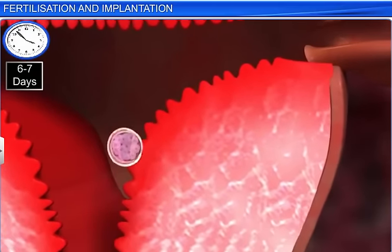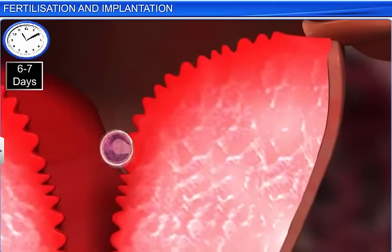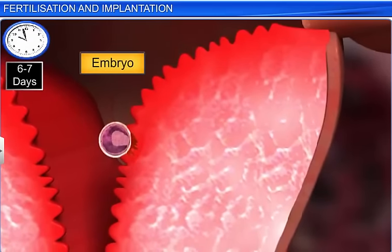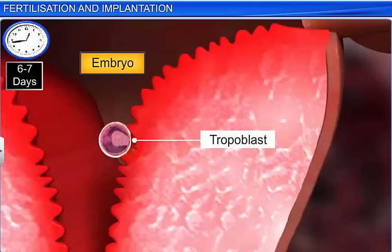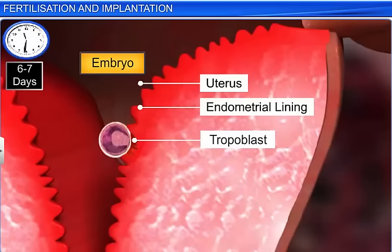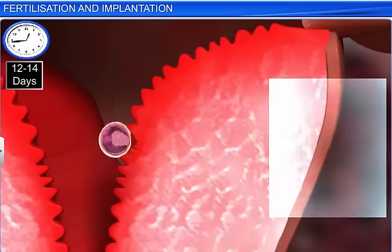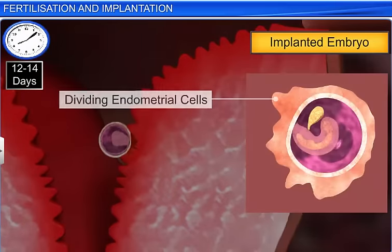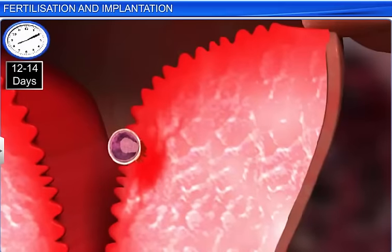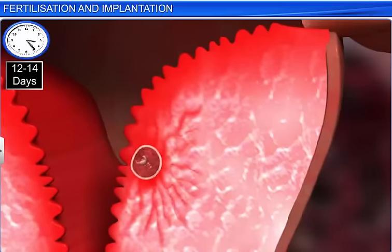Interestingly, at the blastocyst stage, the zygote — now called the embryo — gets attached to the uterus as the trophoblast grows outwards and penetrates the endometrial lining of the uterus. In response, the endometrial cells divide and start surrounding the blastocyst. This causes the blastocyst to sink and get implanted into the uterus. Once implantation has occurred, pregnancy gets initiated.